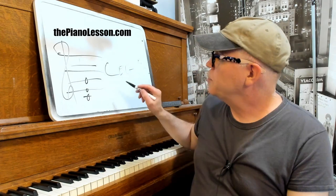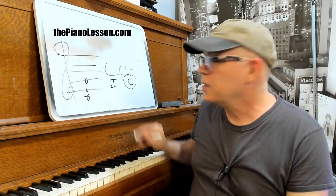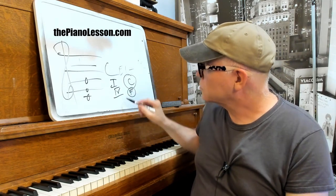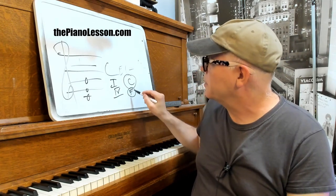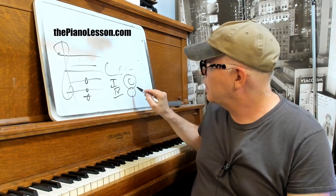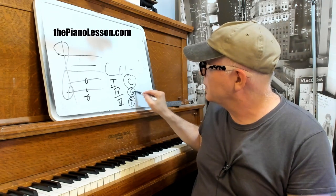So what? How does it function to make music? There are three different ways that it could typically function. It could be the I chord in the key of C, the IV chord in the key of G, or the V chord in the key of F. How does that work?